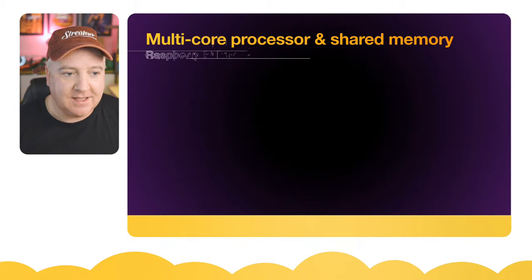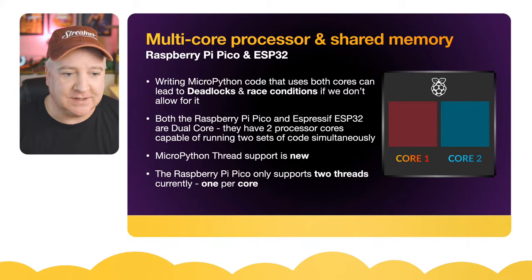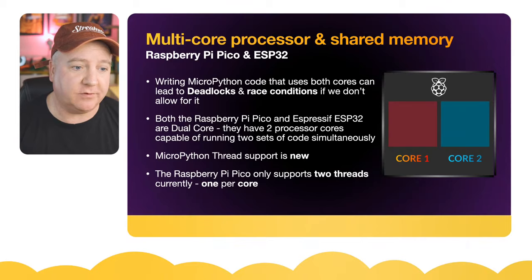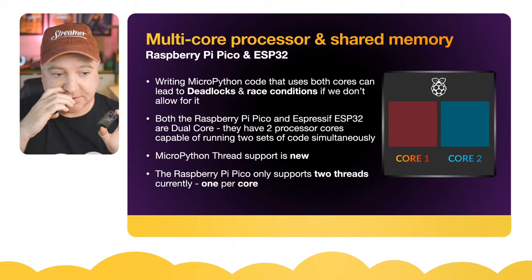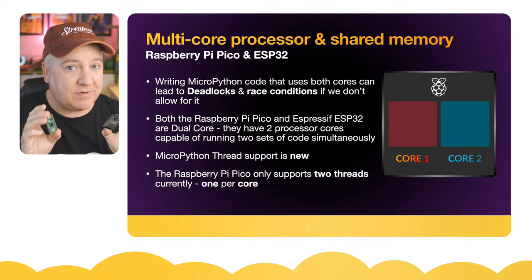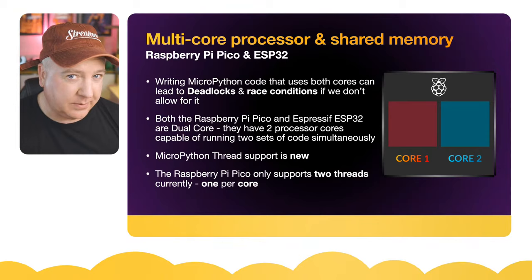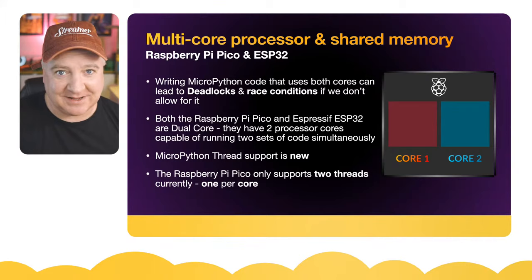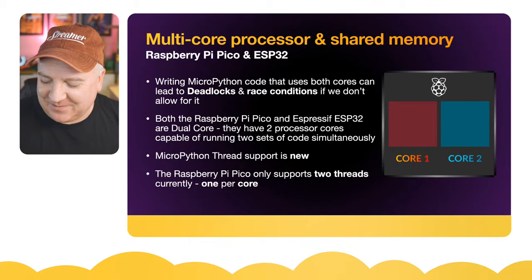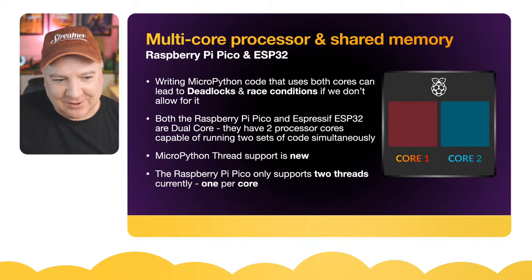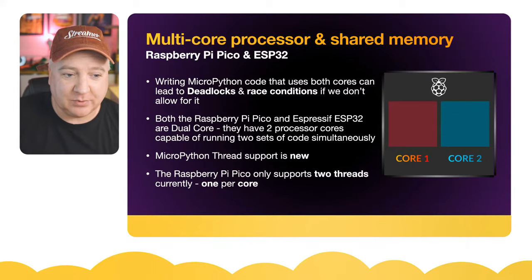Writing MicroPython code that uses both cores can lead to deadlocks and race conditions if we don't allow for it. Both the Raspberry Pi Pico and the ESP32 have dual cores and both support threads through MicroPython - version 1.14 and up, with 1.17 being the most recent at the time of recording. The documentation for thread support is quite sparse right now and there aren't many videos about this either, so this should be quite useful.